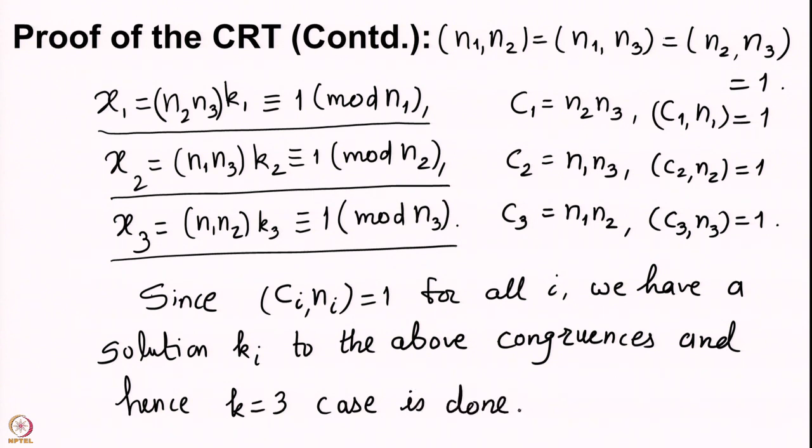We have done the case k = 2, where we had a pair of coprime integers n_1 and n_2, and proved the Chinese Remainder Theorem for that case. We have now also done k = 3, with three pairwise coprime natural numbers n_1, n_2, n_3, and proved there is a solution to the system x ≡ a_1 (mod n_1), x ≡ a_2 (mod n_2), x ≡ a_3 (mod n_3). The general proof will be done in the next lecture. Thank you.